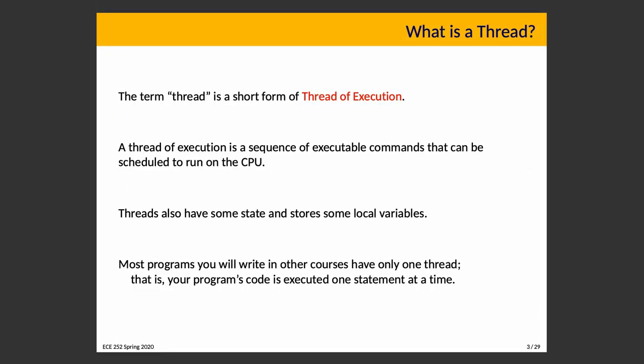The term 'thread' is short for 'thread of execution,' which is a sequence of executable commands that can be scheduled to run on the CPU — a sequence of instructions that can be assigned to run on the CPU. A thread has its own state and its own local variables. Most programs you've written up until now have only one thread, with code executed one statement at a time, sequentially.